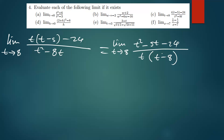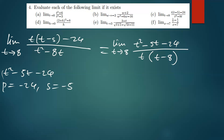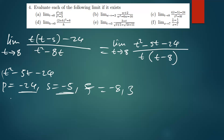Let us factorize the numerator: t squared minus 5t minus 24. The product is 1 times negative 24, which is negative 24, and the sum is negative 5. We need two factors of negative 24 that add to negative 5. When you multiply 8 and 3 you get 24, so the factors are negative 8 and 3 — multiplying to give negative 24 and adding to give negative 5.